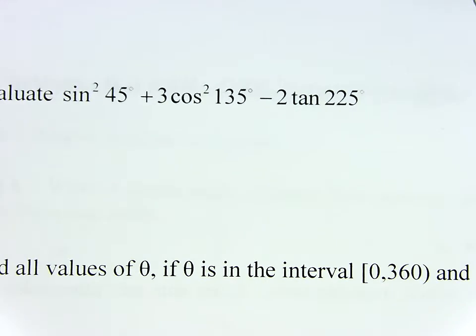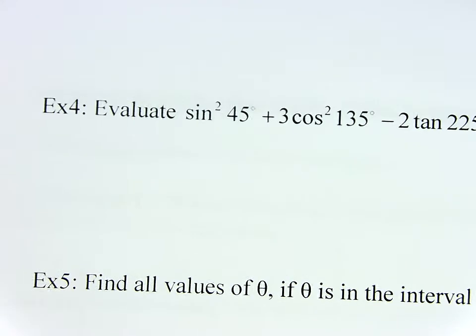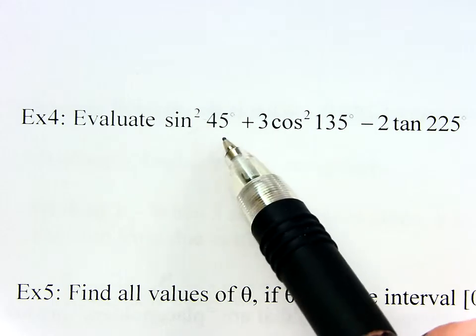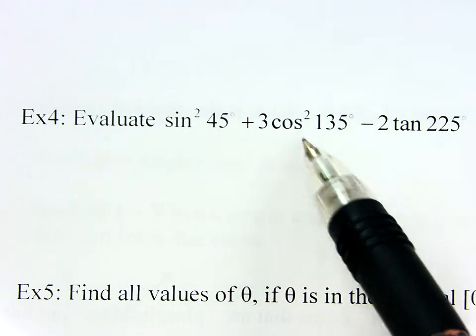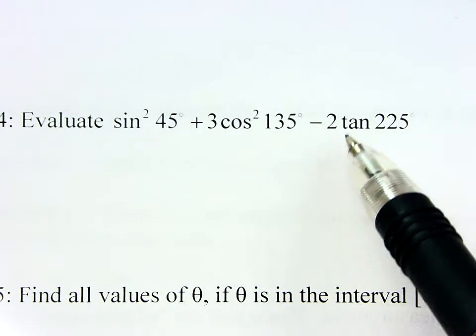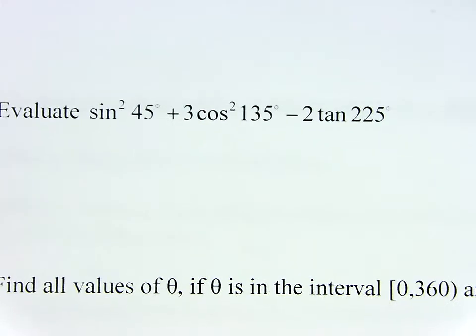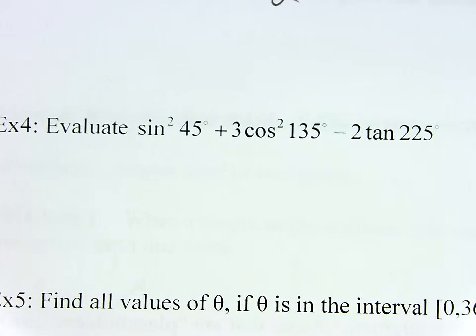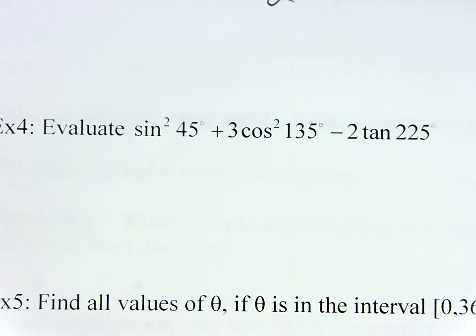Alright, we are looking at example 4 now. Look at this craziness. Evaluate sine squared of 45 plus 3 times cosine squared of 135 minus 2 times the tangent of 225. What in the heck? Oh my gosh. It's actually not as bad as you think it is.